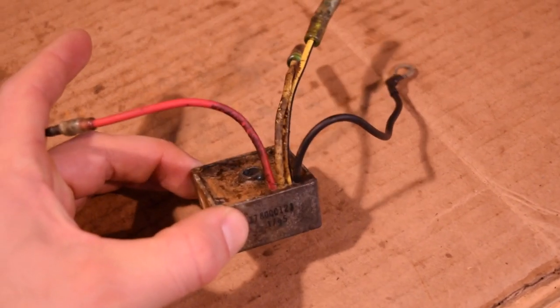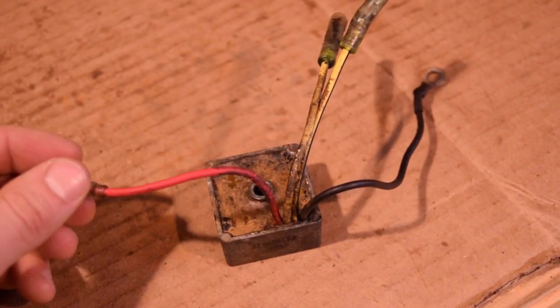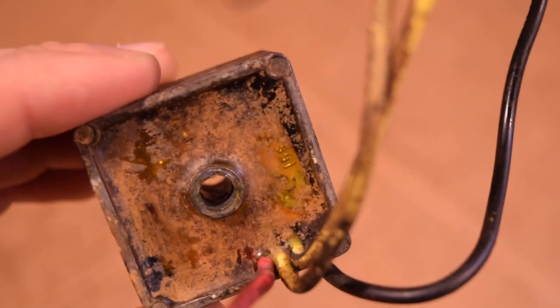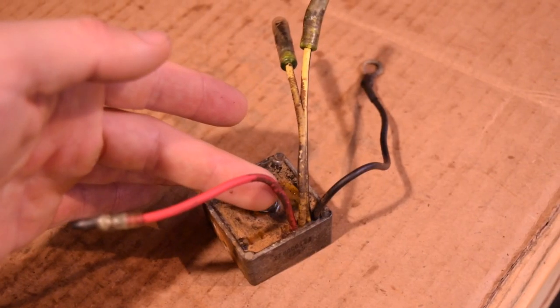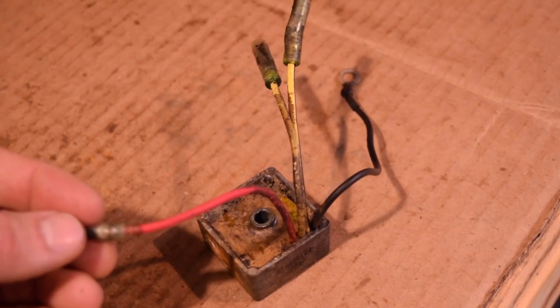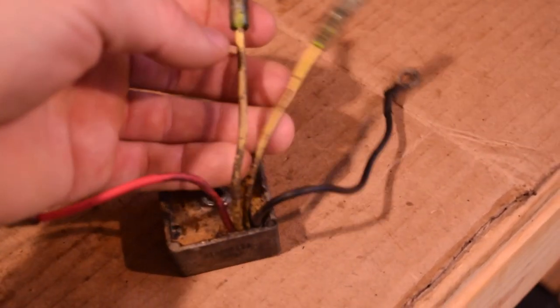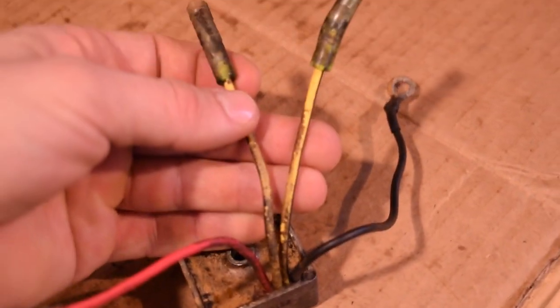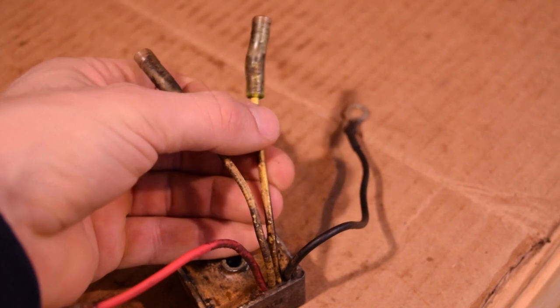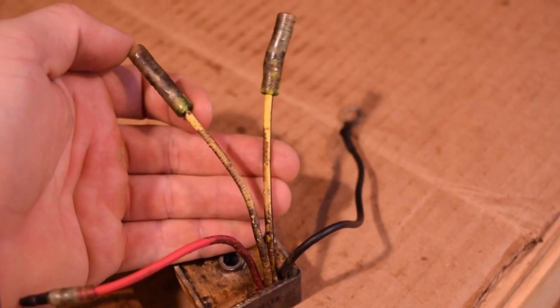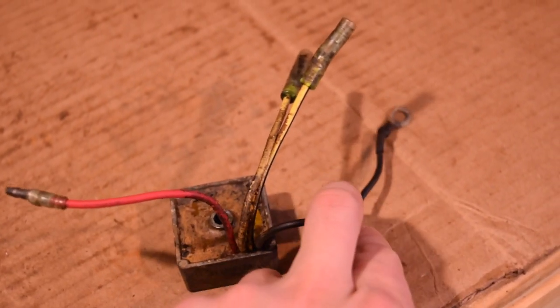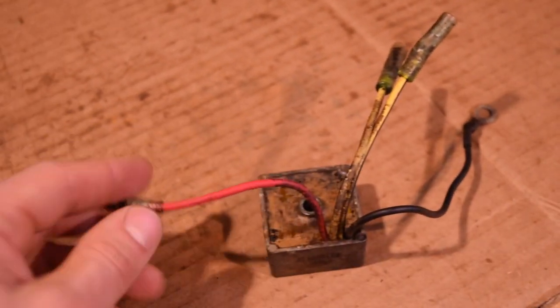This little bud here is the regulator slash rectifier, which converts AC pulses from the magneto to DC in order to charge the battery and run the electronics. This red wire here has a lovely little bend in it, so you can just slide your hand up and gently pluck the tip. These are a couple of yellow wires, which are very important.